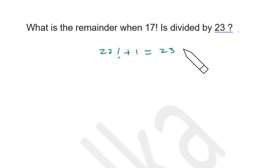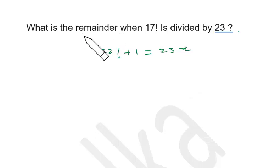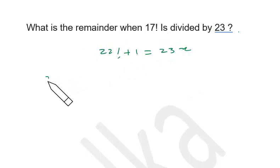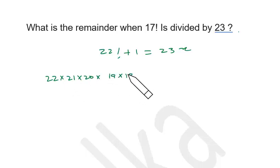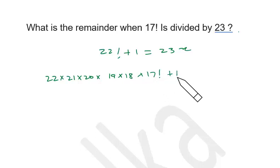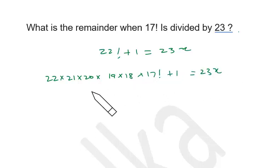22 factorial plus 1 is a multiple of 23 — that's Wilson's theorem, giving us 23x. Now 22 factorial: I want 17 factorial, so 22 into 21 into 20 into 19 into 18 into 17 factorial plus 1 is a multiple of 23.